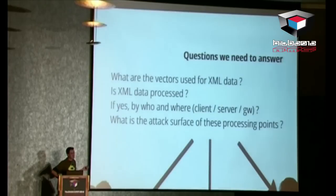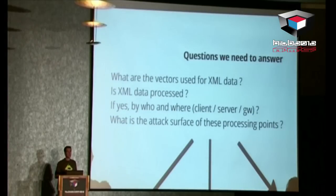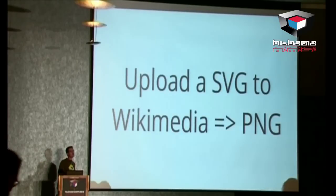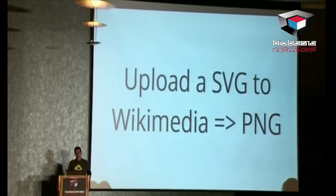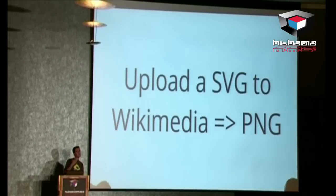When auditing an application using XML, we need to ask ourselves a few questions. First, how can we feed an XML document to the application? And if you find a way to submit data — a file upload, a REST interface, or anything else — you need to ask: is the data processed by the application? For example, if you upload an SVG file to Wikimedia, there is an automatic conversion to PNG which occurs server side, which can be difficult to detect.